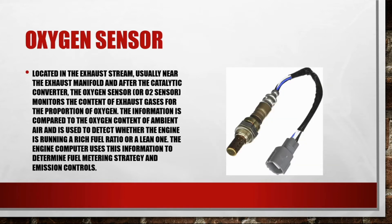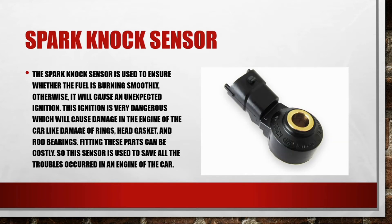The oxygen sensor, or O2 sensor, is located in the exhaust stream, usually near the exhaust manifold and after the catalytic converter. It monitors the content of exhaust gases for the proportion of oxygen. This information is compared to the oxygen content of ambient air and is used to detect whether the engine is running a rich fuel ratio or a lean one. The engine computer uses this information to determine fuel metering strategy and emission controls.